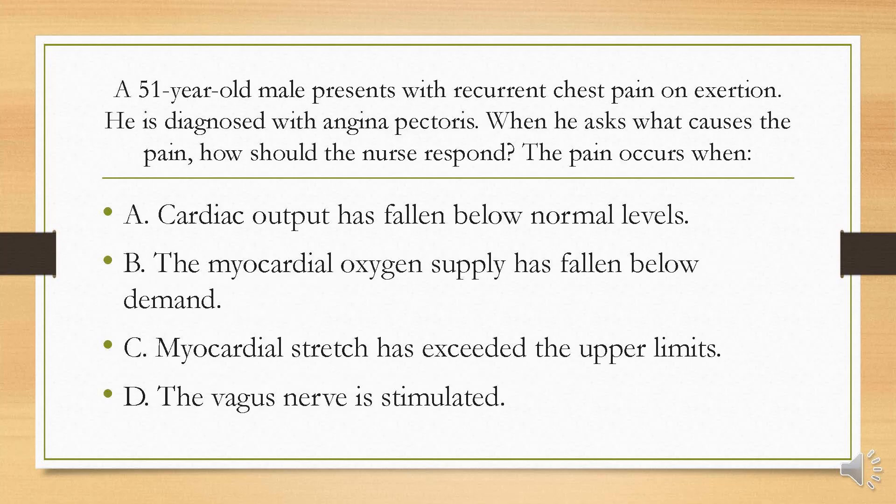A 51-year-old male presents with recurrent chest pain on exertion and is diagnosed with angina pectoris. When he asks what causes the pain, how should the nurse respond? The pain occurs when: A, cardiac output has fallen below normal levels; B, the myocardial oxygen supply has fallen below demand; C, the myocardial stretch has exceeded the upper limits; or D, the vagus nerve is stimulated?